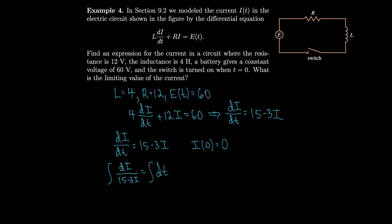We always want to group variables together — dx with x terms and dy with y terms, and here dt with dt terms and di with di. Using a quick mental u-substitution on the left side: the integral of 1 over (15 minus 3i) is a natural log of u, but there's a minus 3 in the denominator, so we multiply by negative one-third. We get negative one-third times the natural log of the absolute value of (15 minus 3i) equals t plus c, grouping constants on one side.